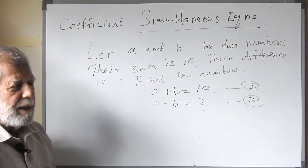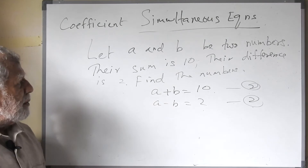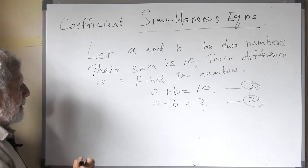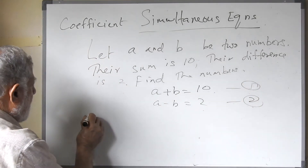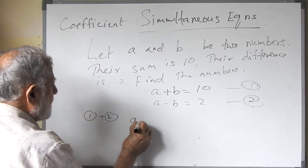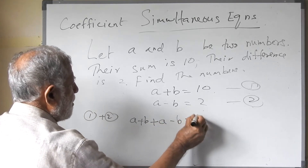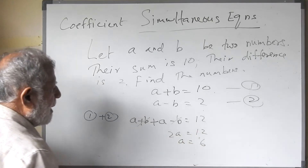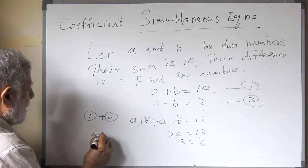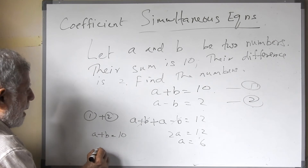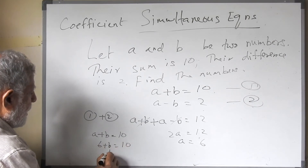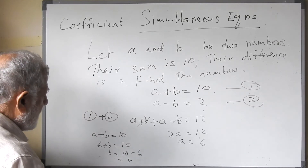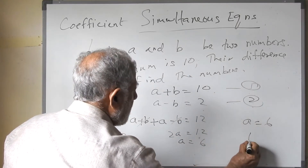We are given: sum of two numbers equals 10 and their difference equals 2. Since the coefficients are the same everywhere, we can add. So 1 plus 2 gives: a plus b plus a minus b equals 10 plus 2 equals 12. The b terms cancel, giving 2a equals 12, so a equals 6. Substituting into the first equation: 6 plus b equals 10, so b equals 4. Therefore a equals 6 and b equals 4.